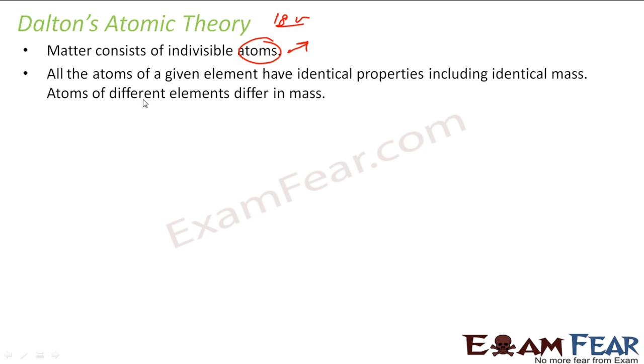All the atoms of a given element have identical properties, including identical mass. Atoms of different elements have different mass. For example, you take any particular matter, for example gold, you will see that the atoms have a particular property. If you take atom of gold and atom of silver or atom of carbon, all these atoms will have different mass and different properties. But all atoms of gold will have similar properties.